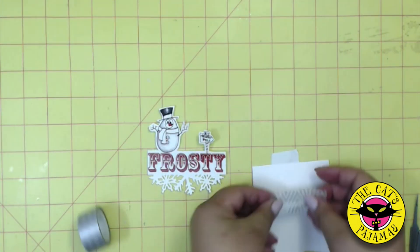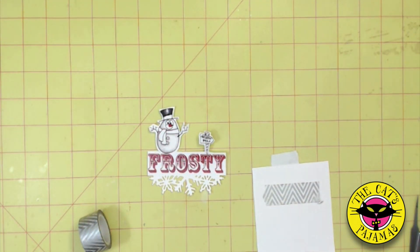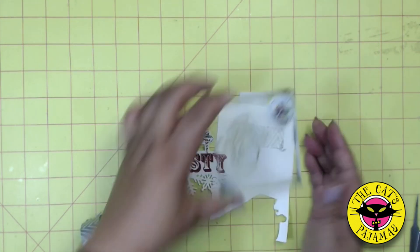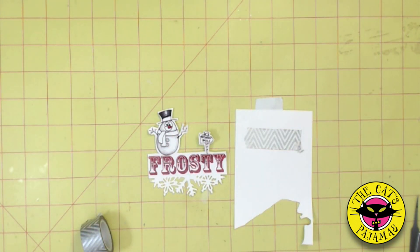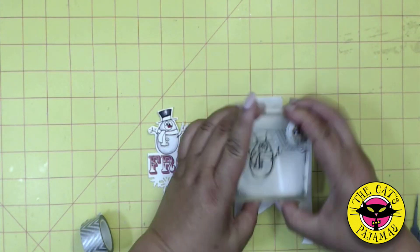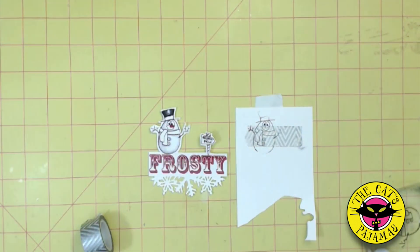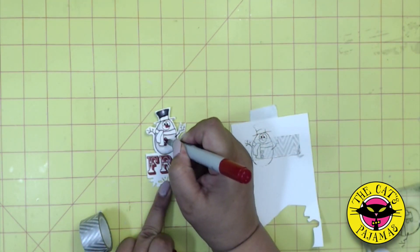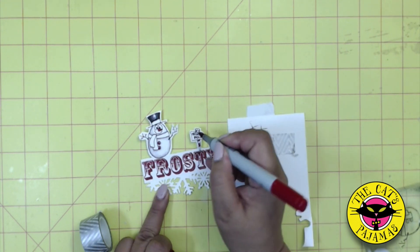Now for the scarf. Put some washi tape down. And I'll stamp the snowman with Versafine Onyx Black on it. And I'll let it dry. In the meantime, we can finish coloring the snowman and the North Pole.